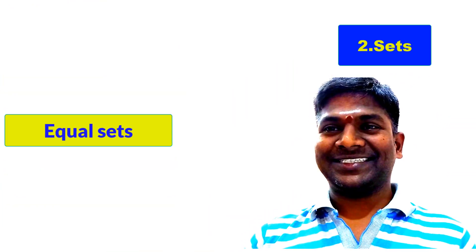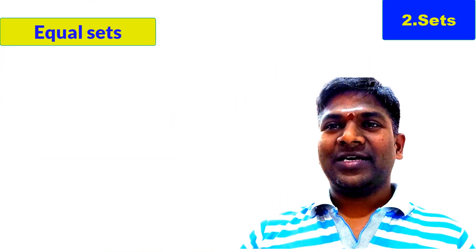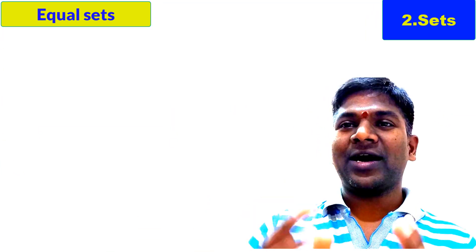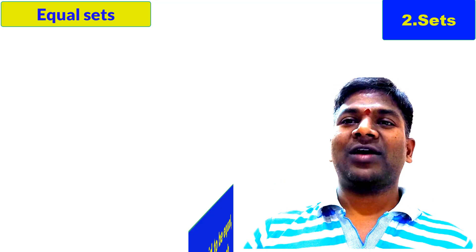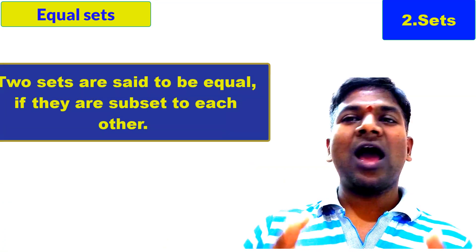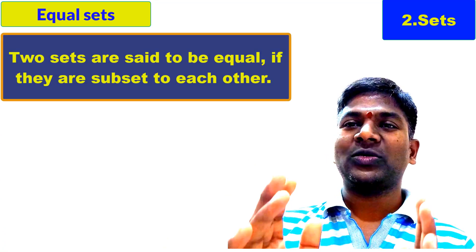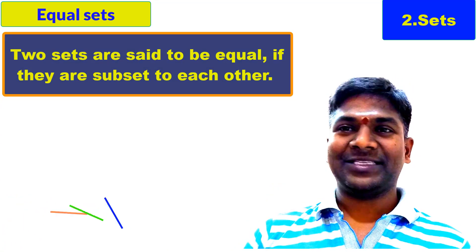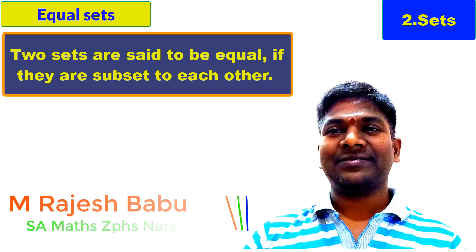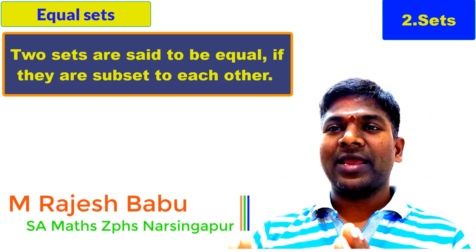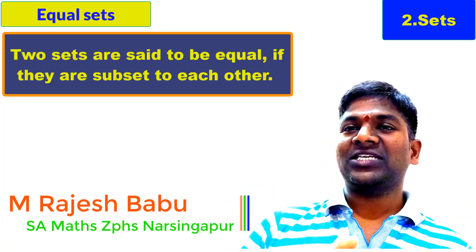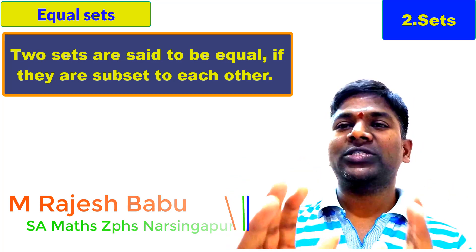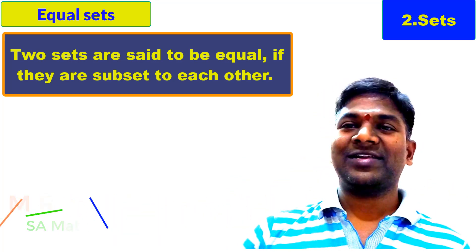What are equal sets? Two sets A and B are said to be equal if they are subsets of each other. Each other means A is a subset of B and B is a subset of A. Then those two sets are equal sets.